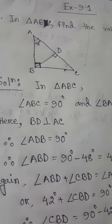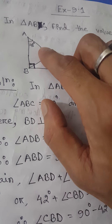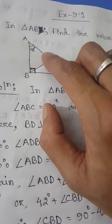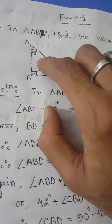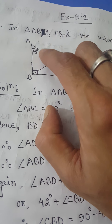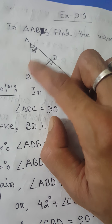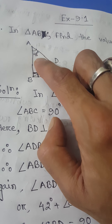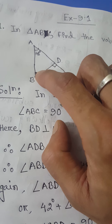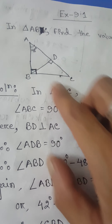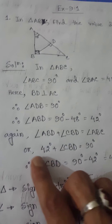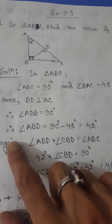So angle ABD is equal to 90 degrees minus 48 degrees, that is 42 degrees. Since one angle is 90 degrees and another is 48 degrees, the remaining angle must be 90 minus 48, which equals 42 degrees.